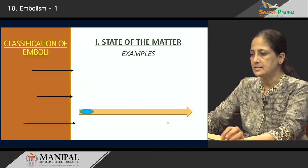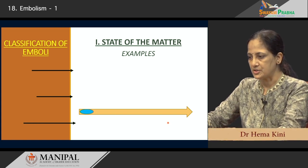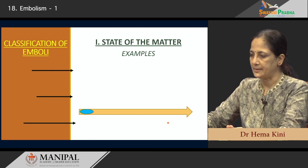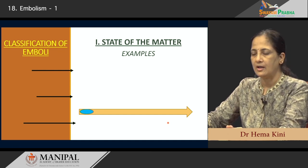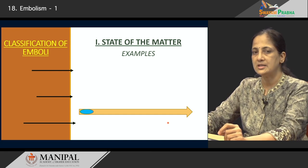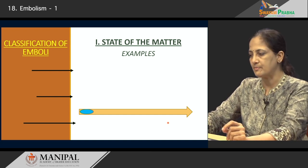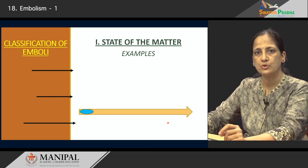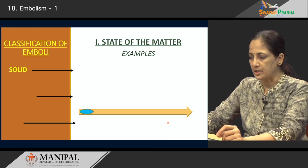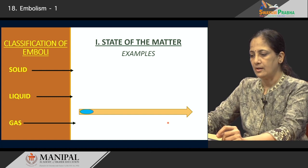Let us now move on to the classification. There are three different ways in which we can classify emboli. The first method is determined by the state of the mass moving in the circulation — for example, it can be a solid material, it could be liquid, or it could be gas.